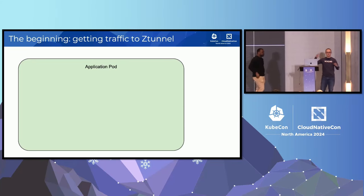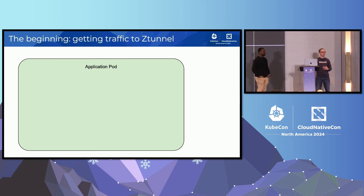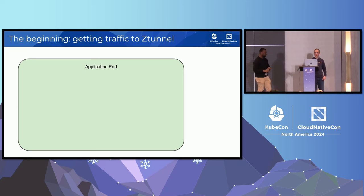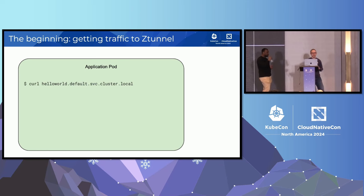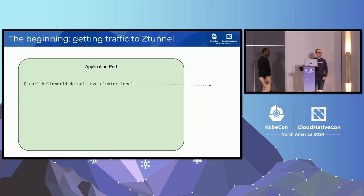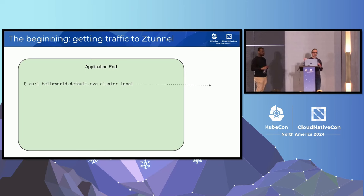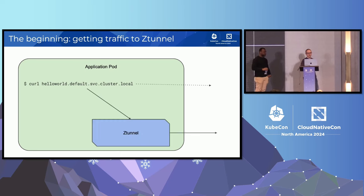Now we're going to take a life-of-a-packet view through a single request from a client application to a server. Our journey starts with a simple client pod running in a cluster that sends a query — say a Hello World service request. With standard Kubernetes networking, that would leave the pod and go through Kubernetes networking to a Hello World pod. With Istio involved, instead of directly leaving the pod, the traffic goes through Z-Tunnel.